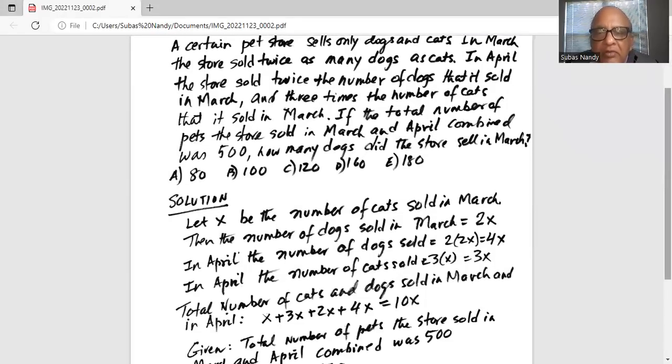We don't know the number of cats sold in March, so we will assume that x be the number of cats sold in March. Then the number of dogs sold in March is two times x.